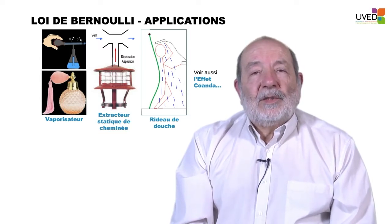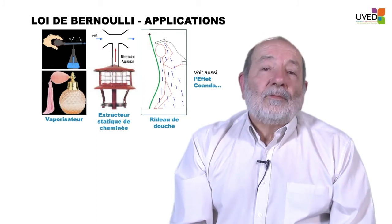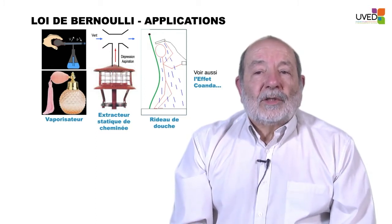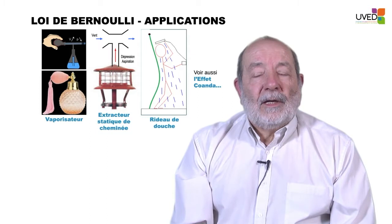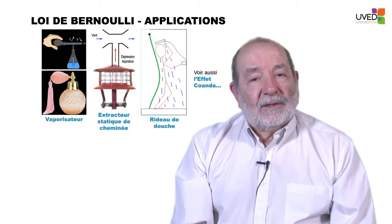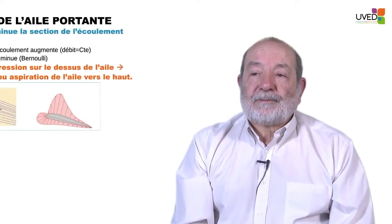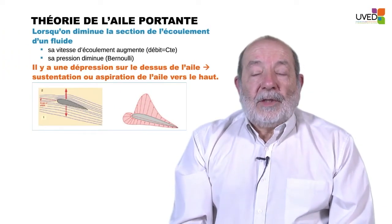We also have the Coanda effect. If we place the round, bulging side of a teaspoon in a water jet, due to the rounded shape the speed will increase locally, creating a vacuum that holds the teaspoon in the water jet.